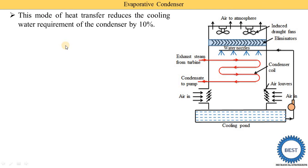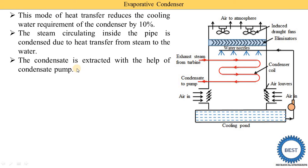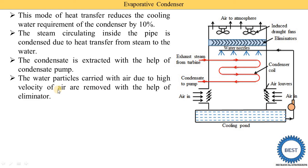This mode of heat transfer reduces the cooling water requirement of the condenser by 10%, meaning evaporative condensers require 10% less cooling water compared to purely water-cooled condensers. The steam circulating inside the pipe is condensed due to heat transfer from the steam to the water, and the water is cooled down by the air flow, so less quantity of water is required. The condensate is extracted with the help of a condensate pump and the water is supplied to the boiler. Water particles carried with the air at high velocity are removed with the help of eliminators.